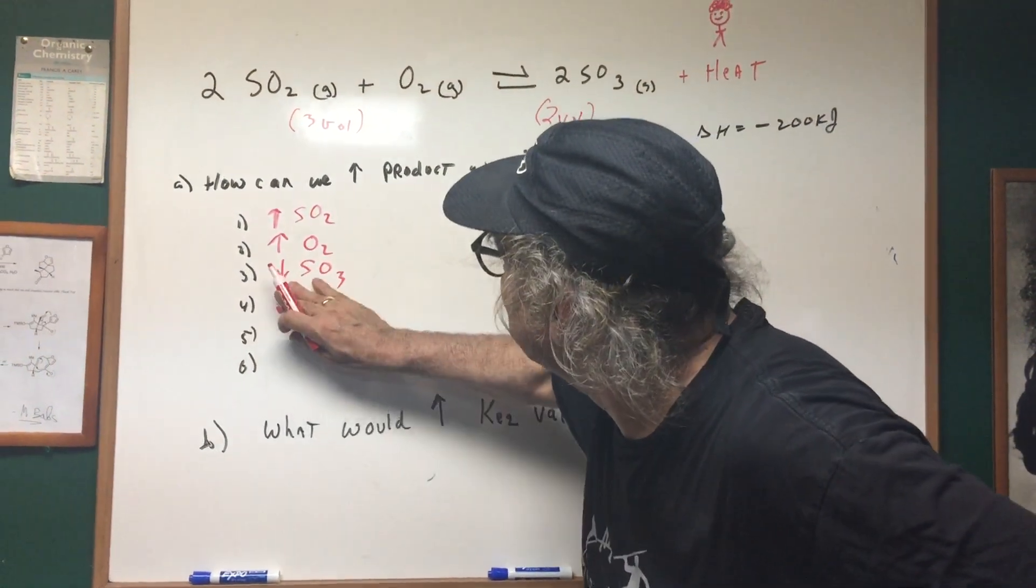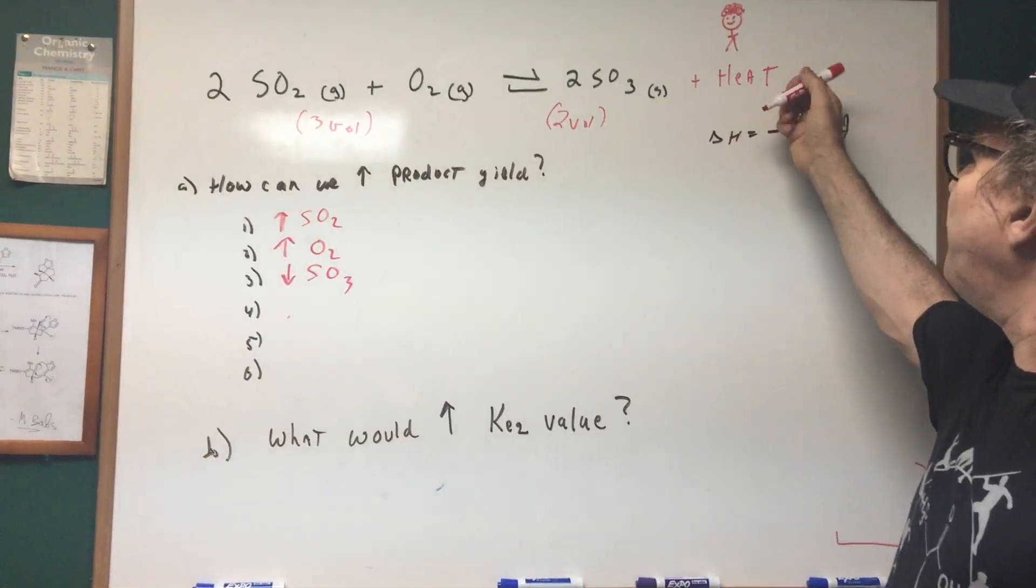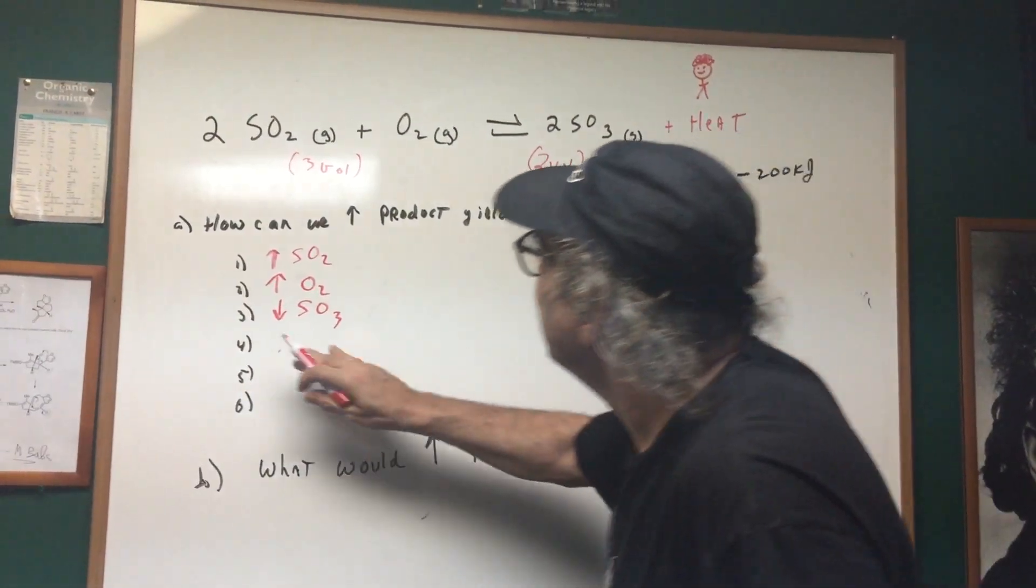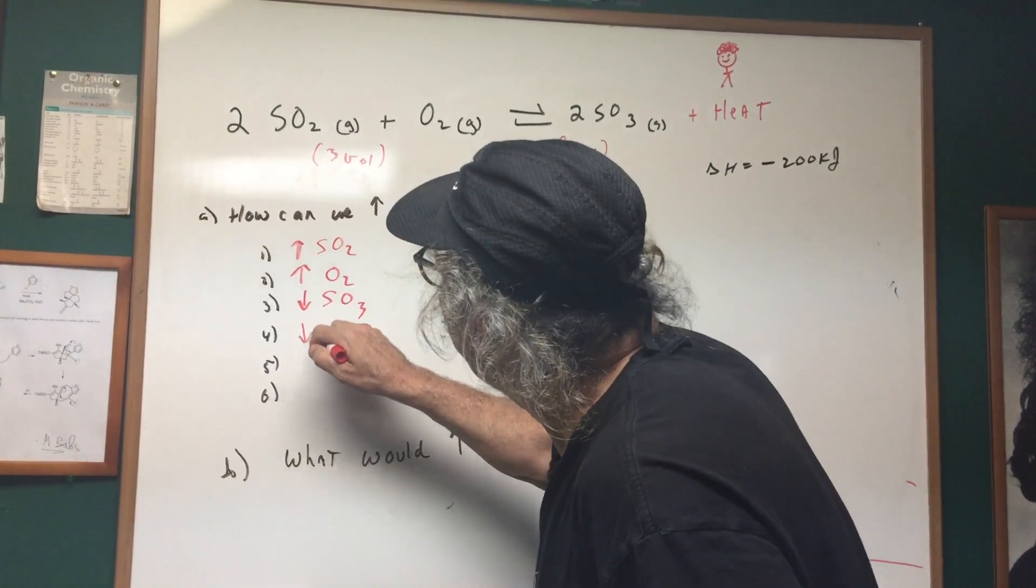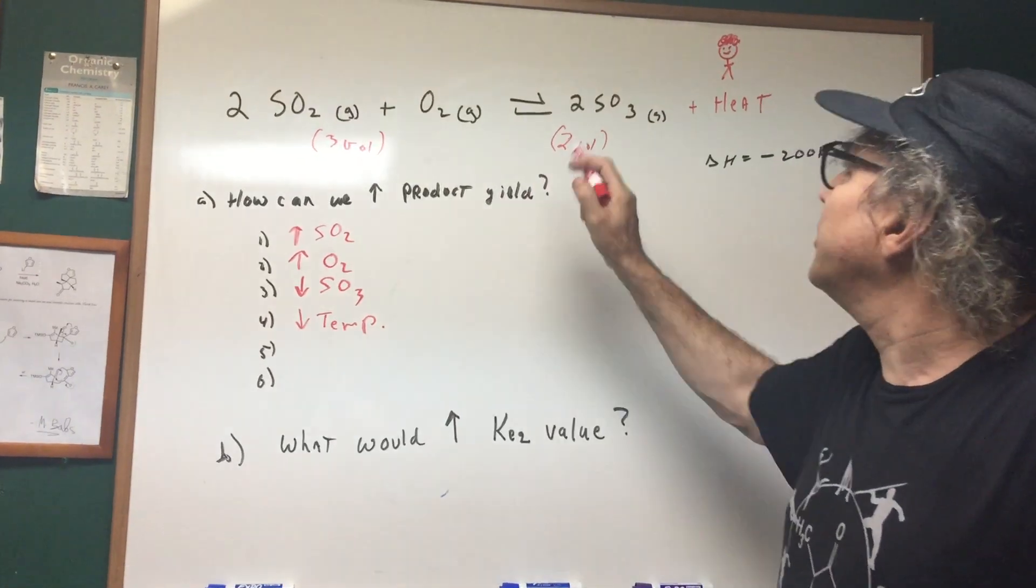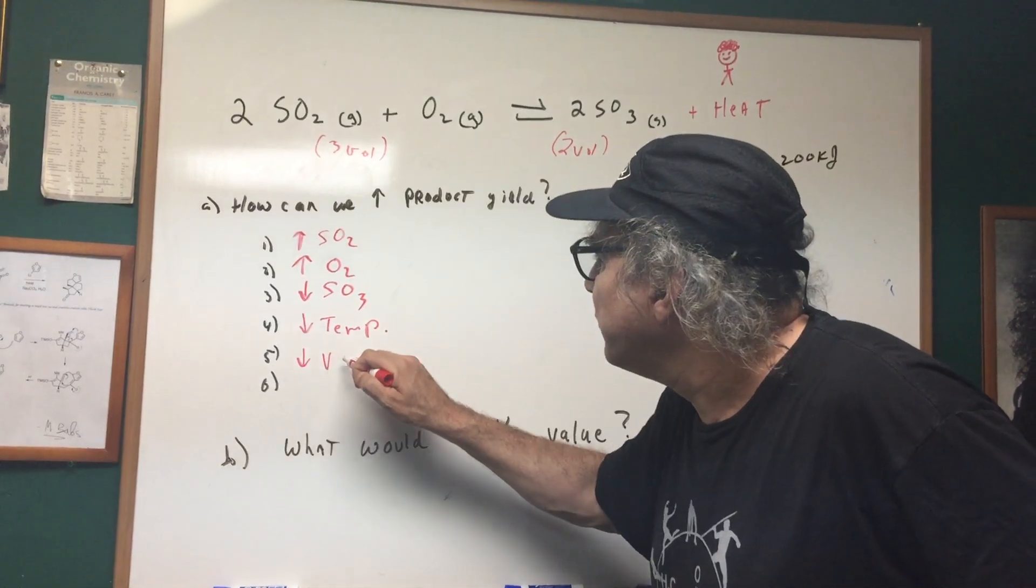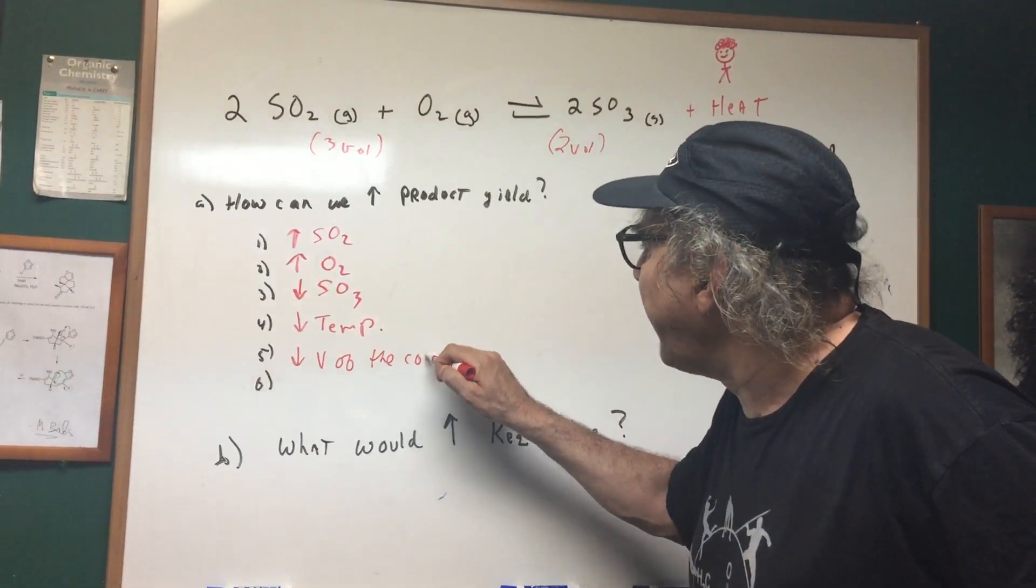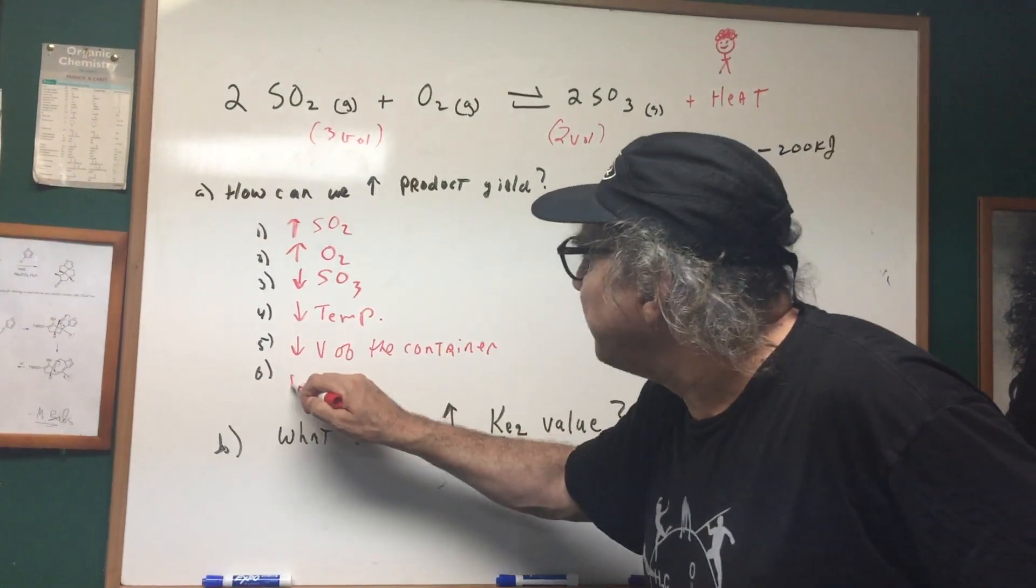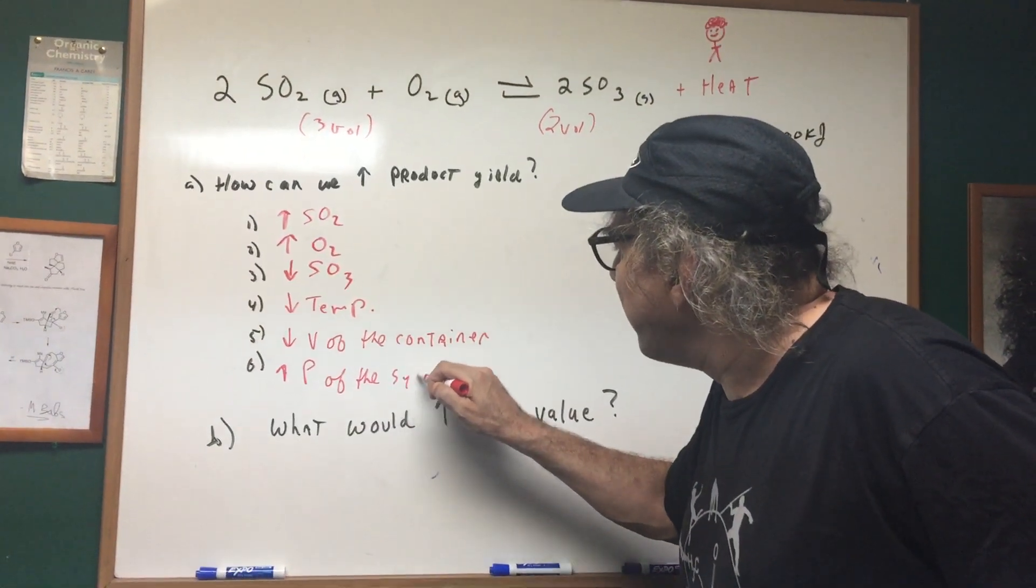Actually, let's do the little trick with Homer first. Now that we got a little Homer, if we increase the temperature he would run to the left. I don't want him to run to the left. I want to keep him on the right side. So I would decrease the temperature. Back to here, we have three volumes and two volumes. You want to go to the lower volume so I'm going to write you decrease the volume of the container and when you decrease the volume of the container that's another way to say increase the pressure of the system. So you got all these ways.